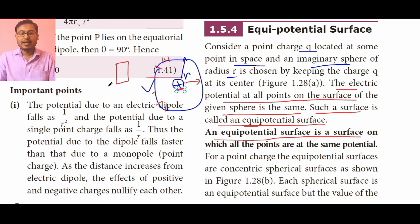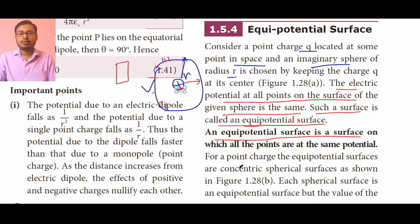In our previous class, we studied about potential because of a point charge and because of a dipole. Let me recall: the potential at a point because of a point charge is given by 1 over 4πε₀ into q over r. If you have missed that video lesson, I request you to go to my previous video. Just touch the mobile screen and at the top corner you will see the I button, and from there you can get the list of my previous videos.